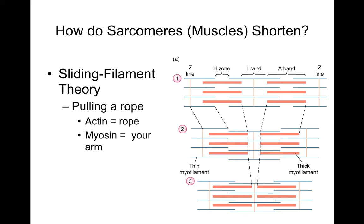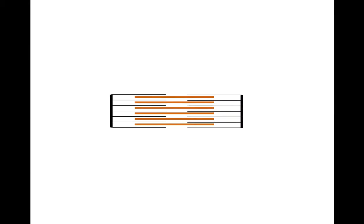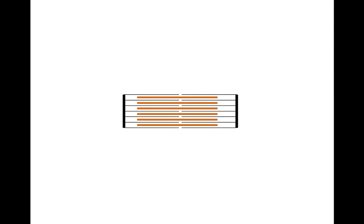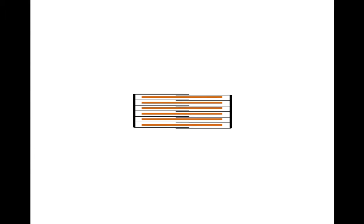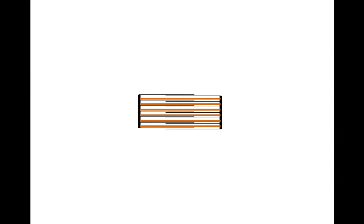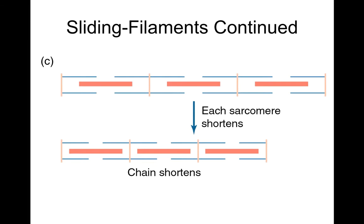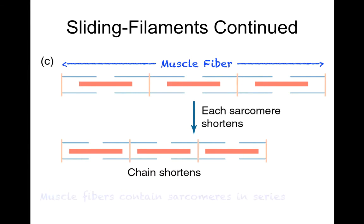How do sarcomeres shorten? There's the sliding filament theory — think about pulling on a rope where the actin or thin filaments is the rope and the myosin heads are your arms going hand over hand, pulling. When the myosin heads pull on the actin, the Z bands get closer together until maximum contraction. Sarcomeres are in series, so a muscle fiber has many sarcomeres that all shorten simultaneously, and the whole muscle fiber shortens. That's how you get from a long relaxed muscle to a short contracted muscle.